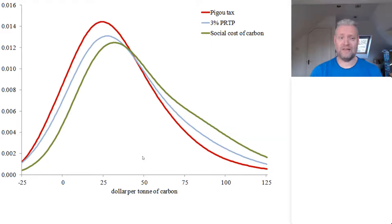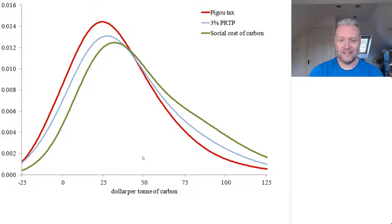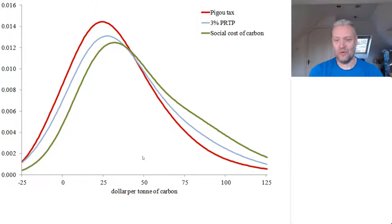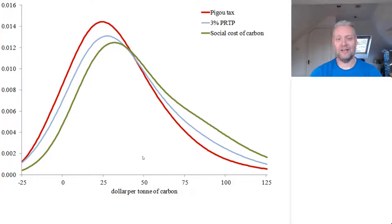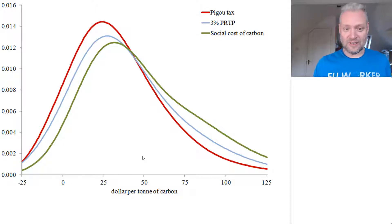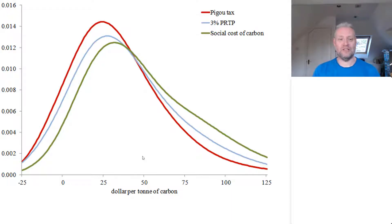The risk about climate change is quite substantial. We have seen this particular graph, or a variant of it, a number of times now. This is the social cost of carbon and the Pigou tax for a 3% pure rate of time preference. You see the best guess is around $25 per ton of carbon, but there is a wide spread around this. We are not at all certain about what this Pigou tax should be.